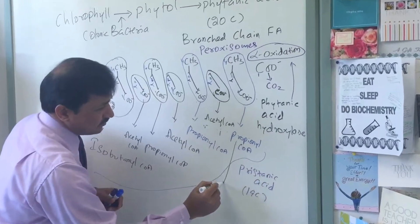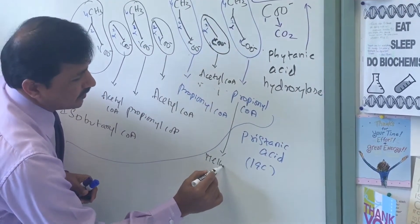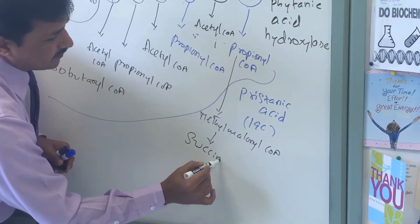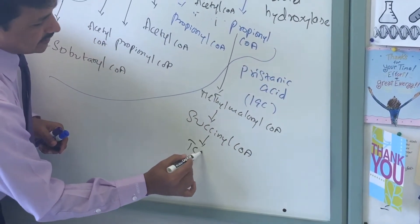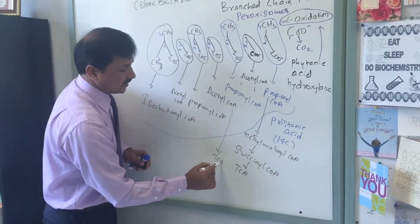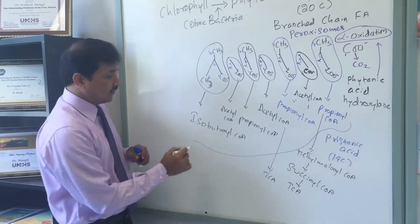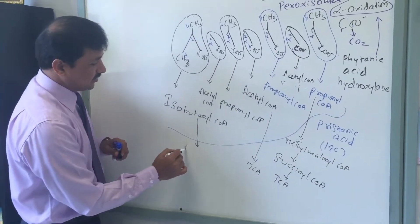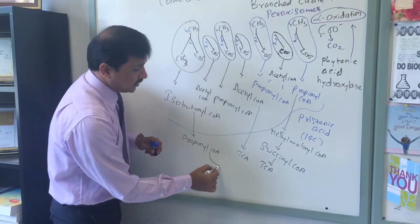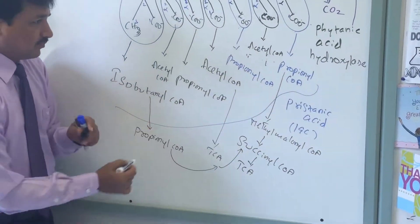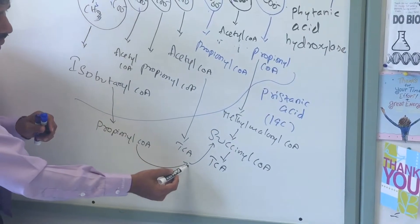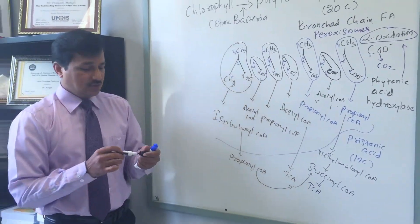Propionyl-CoA is converted to methylmalonyl-CoA, and methylmalonyl-CoA is converted to succinyl-CoA, which enters the TCA cycle. Acetyl-CoA also enters the TCA cycle and is oxidized. Isobutyryl-CoA, by several reactions, is converted to propionyl-CoA, which is then converted to methylmalonyl-CoA and then succinyl-CoA, which enters the TCA cycle.